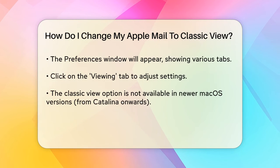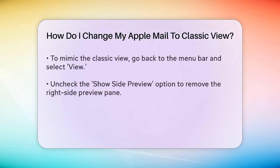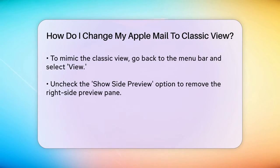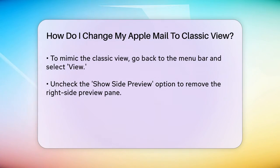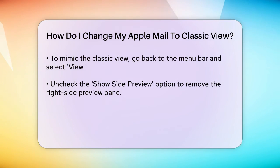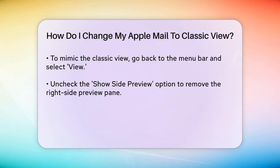To do this, go back to the menu bar and select View. Here, you'll find two key options: Show Side Preview and Use Column Layout. Uncheck the Show Side Preview option — this will remove the preview pane that appears on the right side of the window in the Modern View. Next, make sure Use Column Layout is checked, which will arrange your emails in a column format similar to the Classic View.